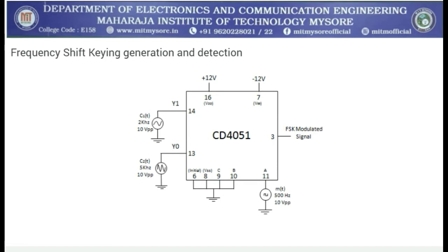You can observe these in the output waveform. With respect to its block diagram, inputs C1 and C2, which are of 2 kHz and 5 kHz frequencies with an amplitude of 10 volt peak to peak, are given to the CD4051 IC. Apart from this, message bit signals of 500 Hz along with 10 volt peak to peak will be applied at pin number 11, and at pin number 3 you are going to have a FSK modulated signal.